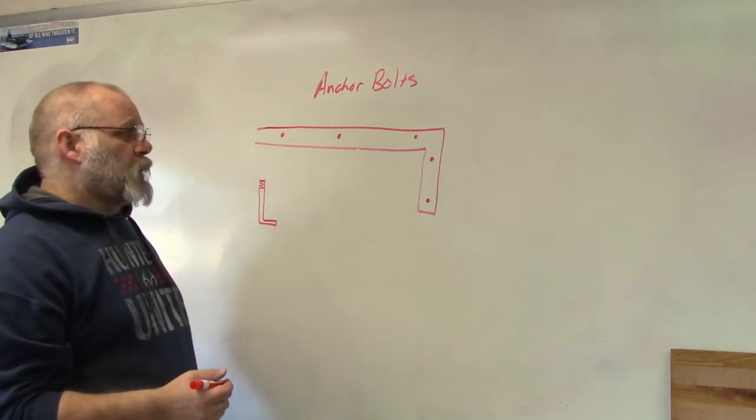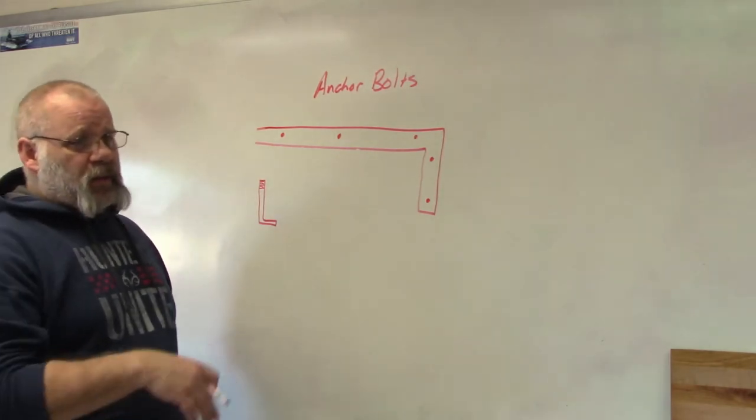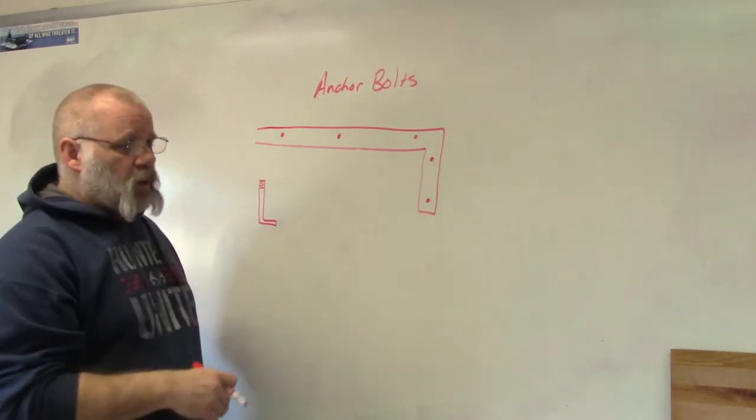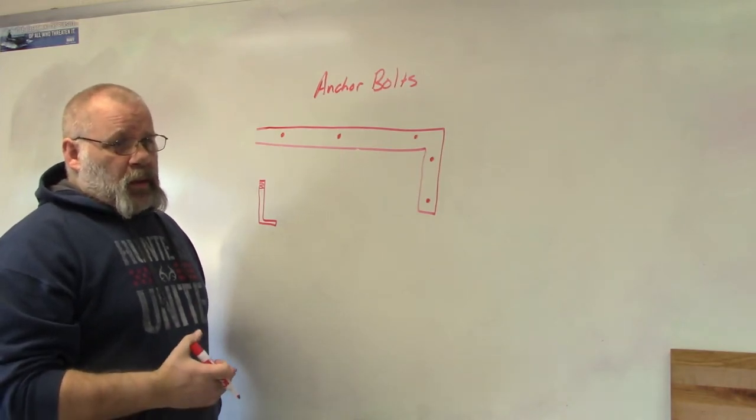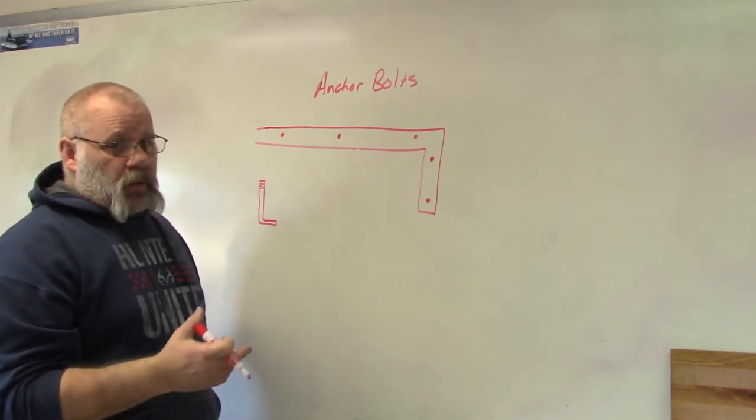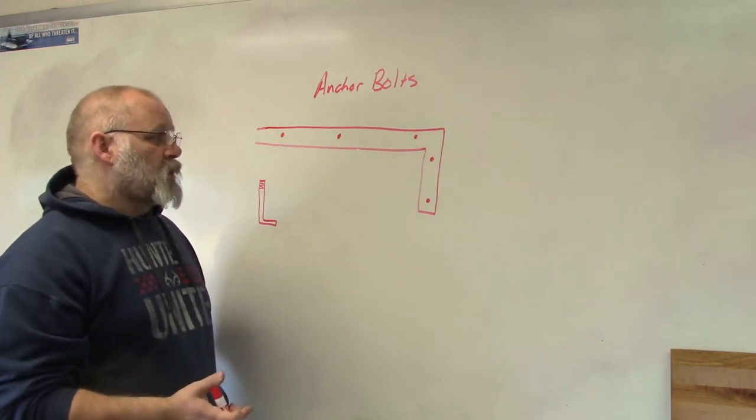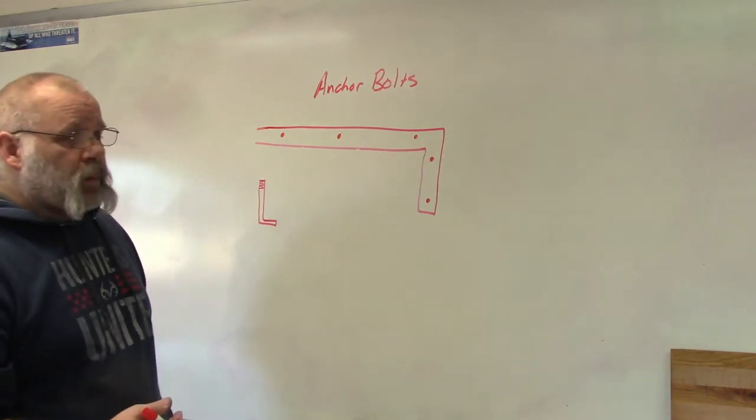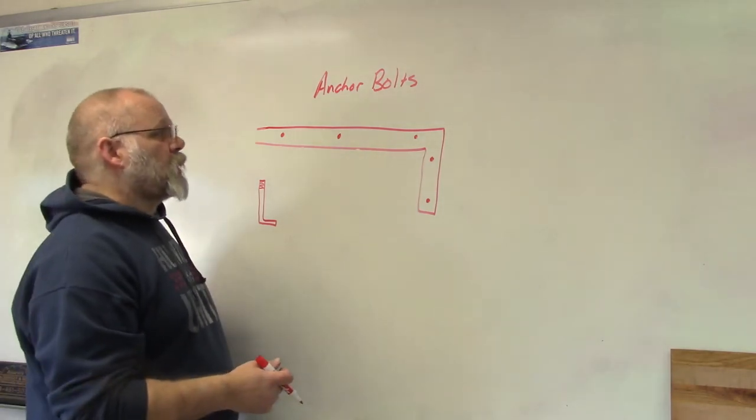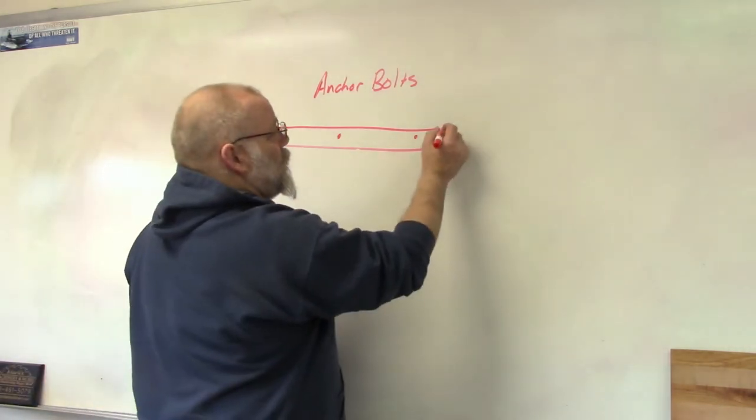Now the code - I'm going to give you the codes, and like I said in previous videos, the code is the minimum. So if you want to add more, or your local code says you need to have more, then you need to look at all your local codes to make sure to put in the correct amount of anchor bolts and where to locate them.